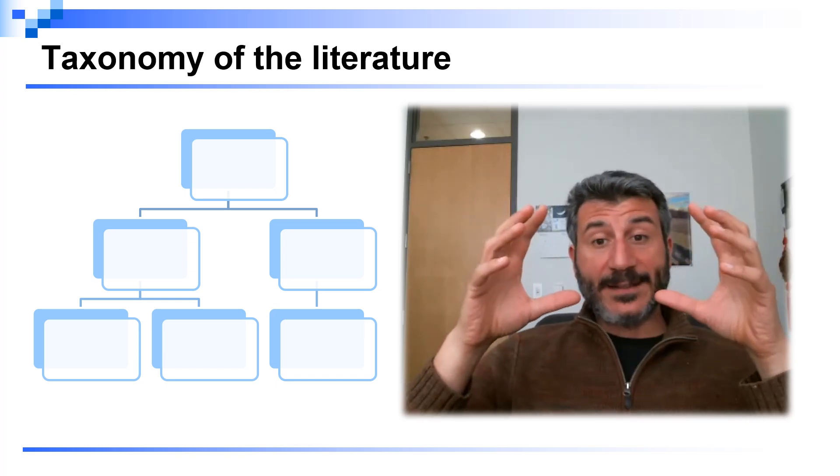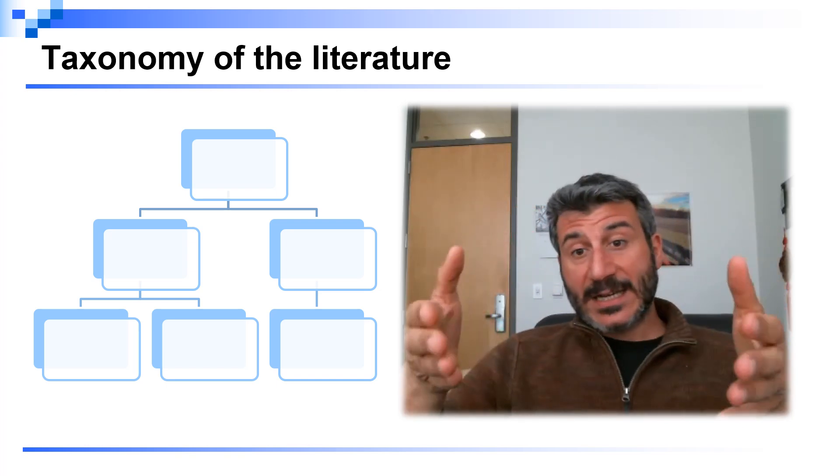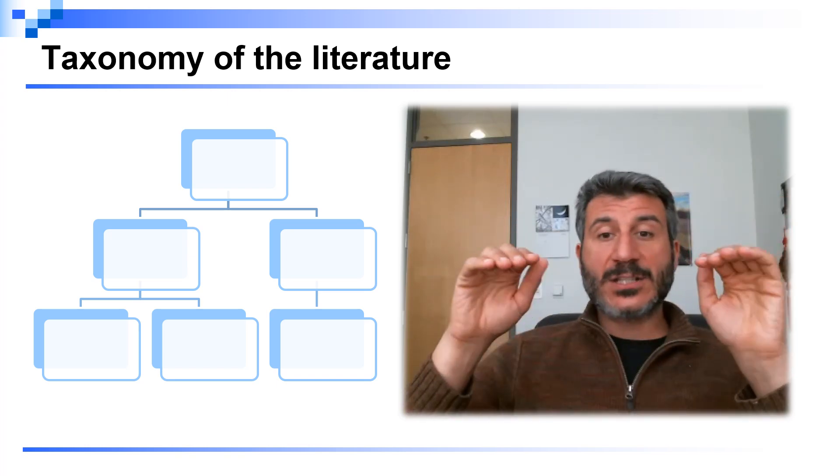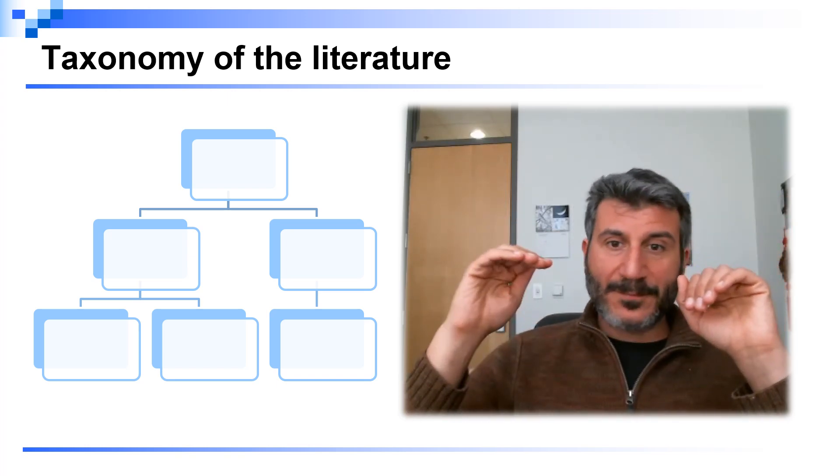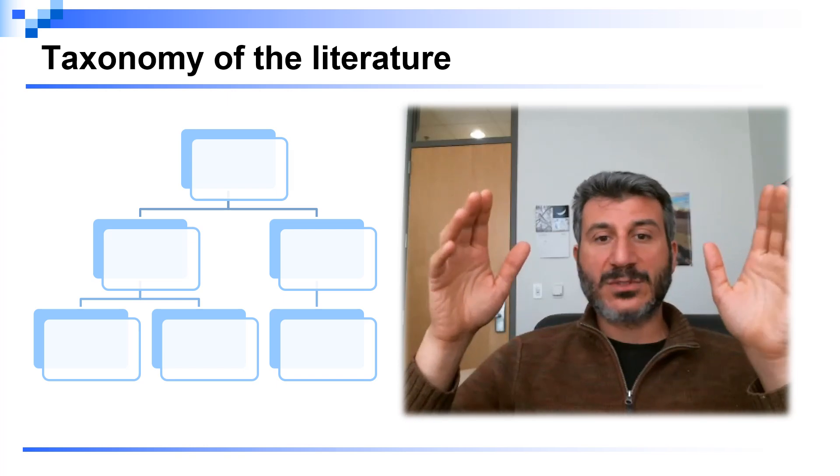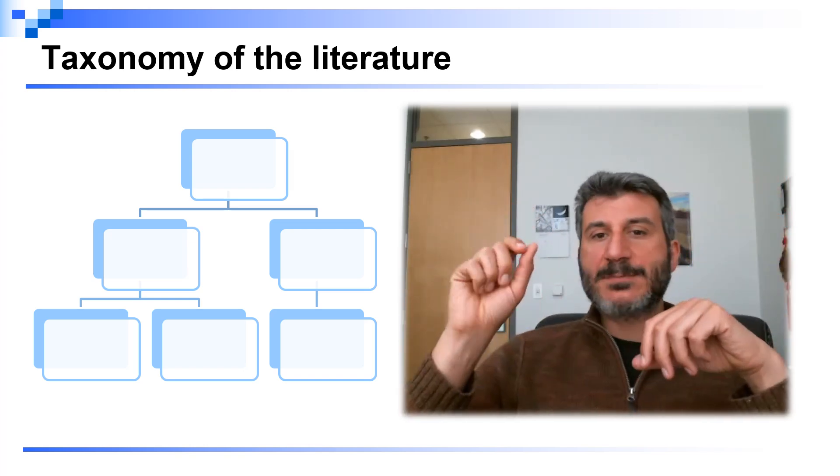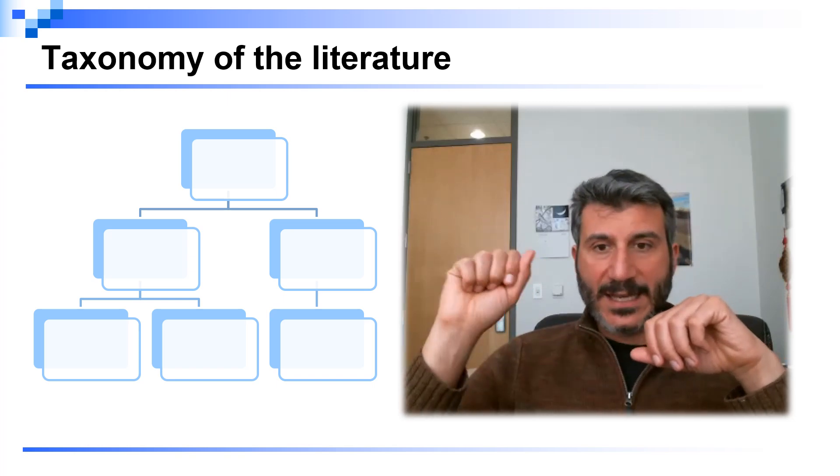Once you have identified the papers that you actually want to describe in the related work section, something you should not do is just to list paper by paper a small sentence about what the paper is about and that's it. Like without order, without structure, just saying this paper did this, this paper did that, and so on.